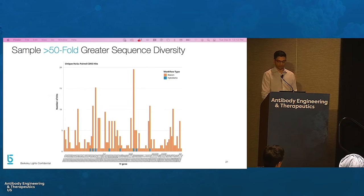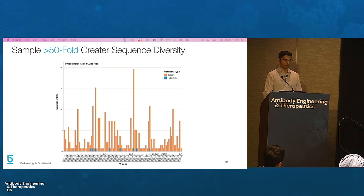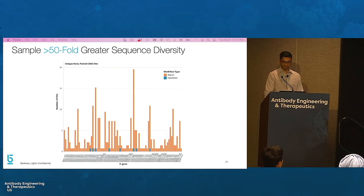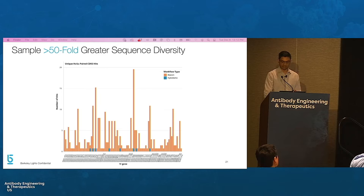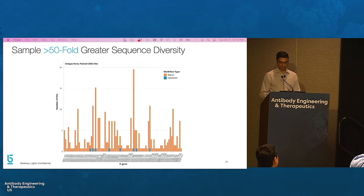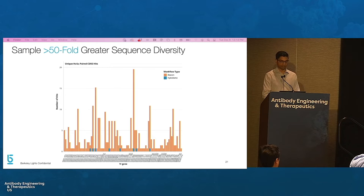We conducted a head-to-head study between a hybridoma workflow and an Opto-Plasma B discovery workflow against a membrane antigen called TIM3. The hybridoma workflow followed conventional B-cell immortalization by cell fusion, whereas the Opto-Plasma B workflow directly screened plasma B-cells from the same immunized mice. Only 8 of the 67 antibodies discovered using hybridoma contained unique heavy chain CDR3 sequences, compared with over 50% of over 500 antibodies discovered on the Opto-Plasma B workflows. The V gene families identified spanned a wide range, including all families from which hybridoma antibodies were found. In sum, the Opto-Plasma B workflows yielded a larger, more sequence-diverse panel of antibodies.